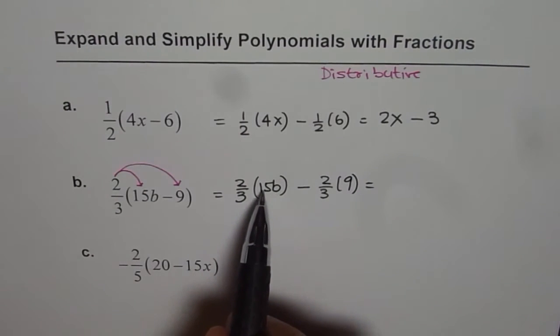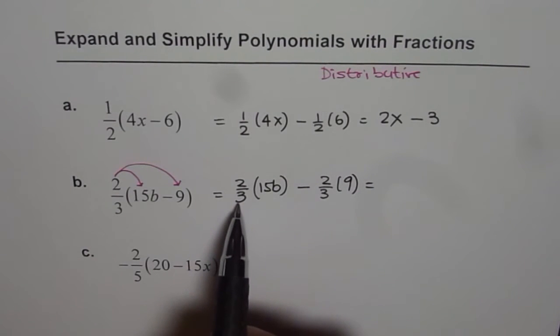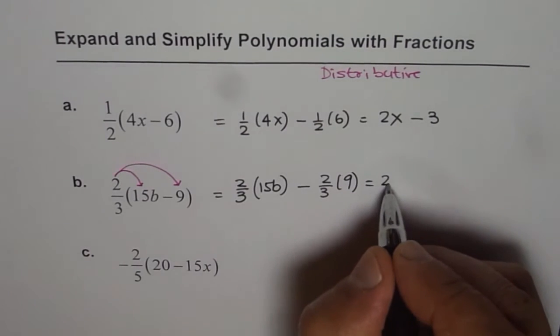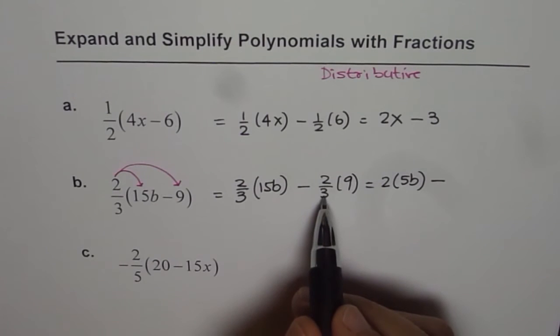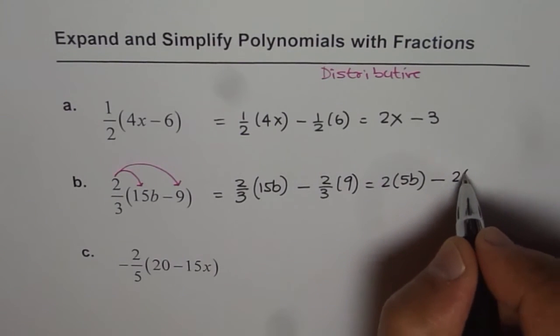Now when you divide 15 by 3, what do you get? 5. So you have 2 times 5b minus, when you divide 9 by 3, you get 3. 2 times 3.